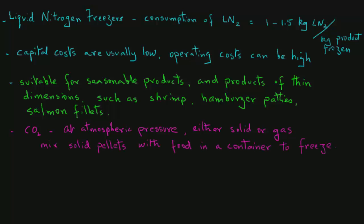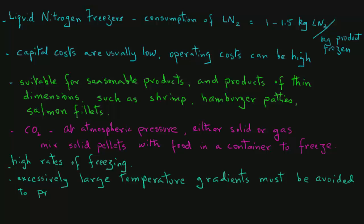In cryogenic freezing, although the high rate of freezing should give us good quality, care should be taken to avoid excessively high temperature gradients, because that can lead to cracking of the food and thus actually impair the quality. That is why cold vapors that are generated from the boiling cryogen are circulated towards the inlet of the freezer chamber, so that the product is pre-cooled to avoid the large temperature gradients during the freezing process.